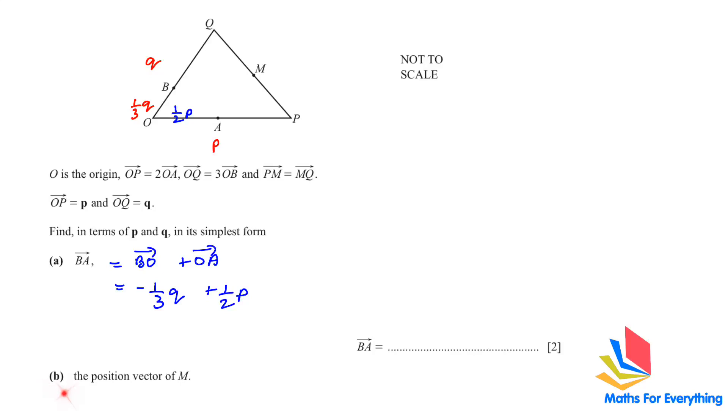Next part of the question, the position vector of m. Position vector of m means we have to start from O and reach M. What has been given about M? PM is equal to MQ. It means M is the midpoint of PQ. So, first let us find PQ. To find PQ, we will use PO plus OQ. That will be negative p plus q. So, what is PM going to be? Half of PQ.